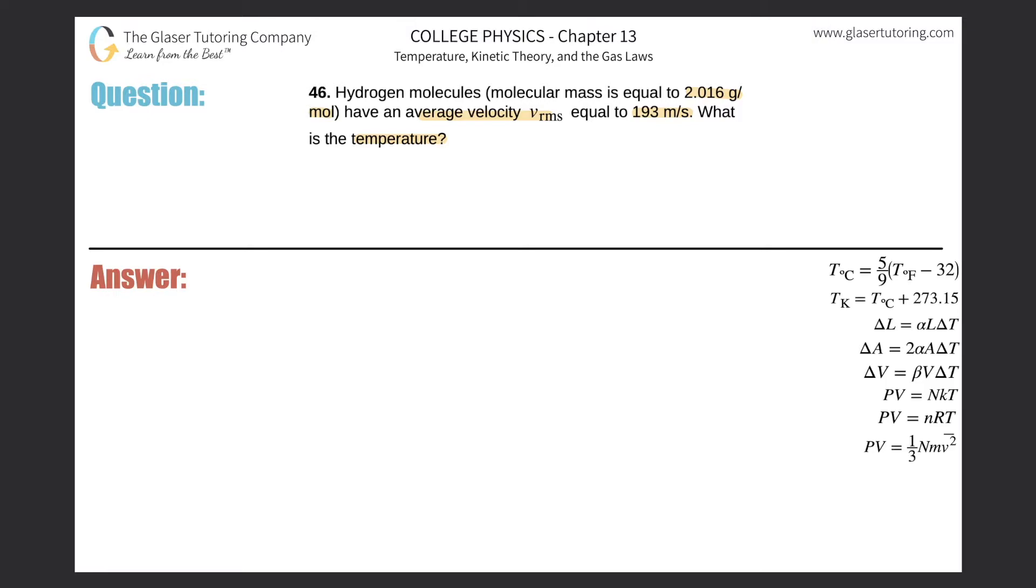Do we know a formula? Sure we do. We have that the root mean square velocity will be equal to square root of 3kT all over m.